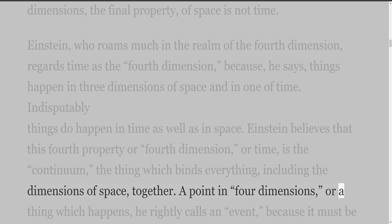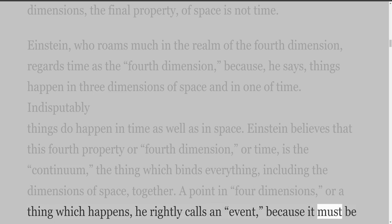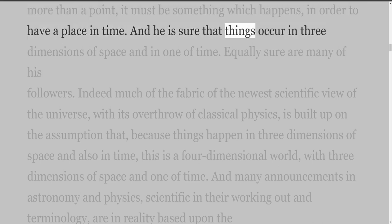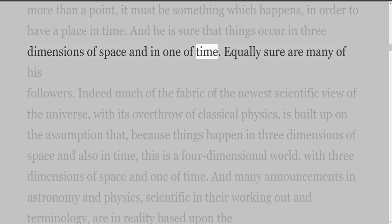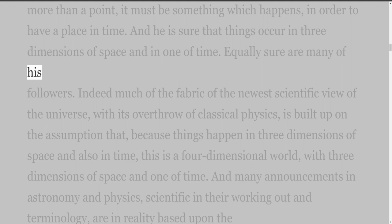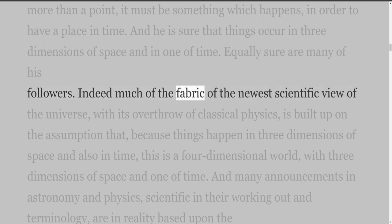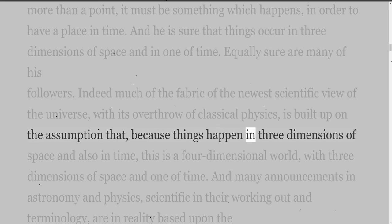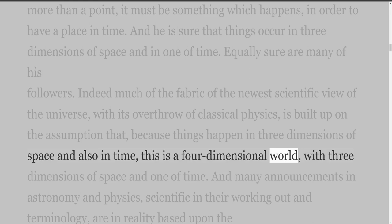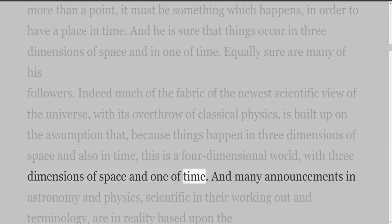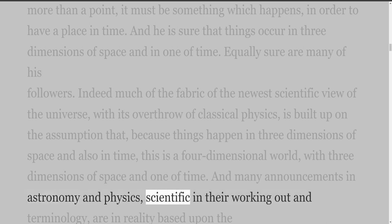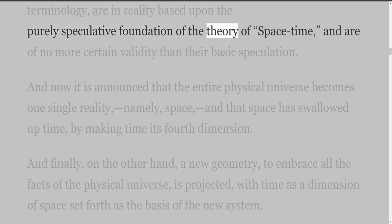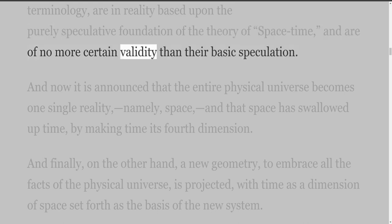A point in four dimensions, or a thing which happens, he rightly calls an event, because it must be more than a point — it must be something which happens in order to have a place in time. And he is sure that things occur in three dimensions of space and in one of time. Indeed, much of the fabric of the newest scientific view of the universe, with its overthrow of classical physics, is built up on the assumption that because things happen in three dimensions of space and also in time, this is a four-dimensional world. And many announcements in astronomy and physics are in reality based upon the purely speculative foundation of the theory of space-time, and are of no more certain validity than their basic speculation.